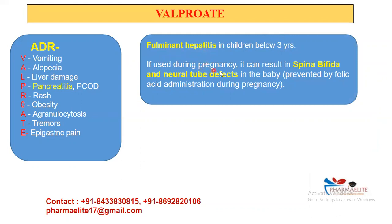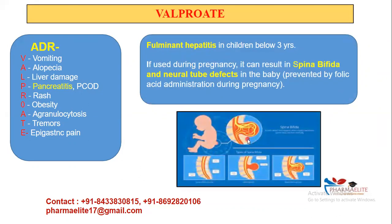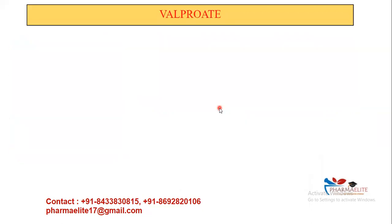During pregnancy, valproic acid cannot be given because it causes spina bifida and neural tube defects. To prevent neural tube defects, we give folic acid. Spina bifida — also called split spine — is a birth defect where the spinal cord is not developed properly, creating two divisions.